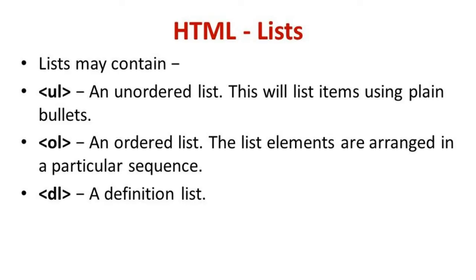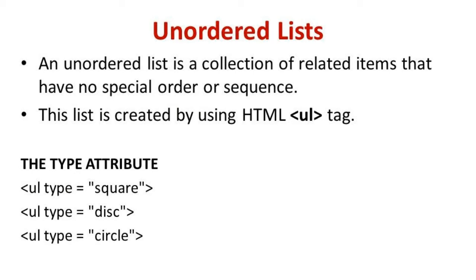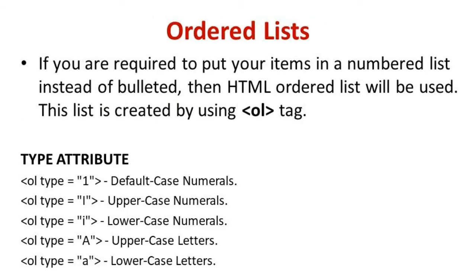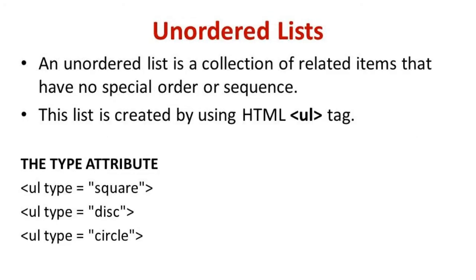Next, we will study lists. If we want to present text in the form of bullets or in an ordered or unordered sequence, we use lists. There are three types: ul tag for unordered list, ol tag for ordered list, and dl tag for definition list. An unordered list is a collection of related items with no particular order, created using the ul tag. We can change the bullet style using the type attribute: square, disc, or circle.